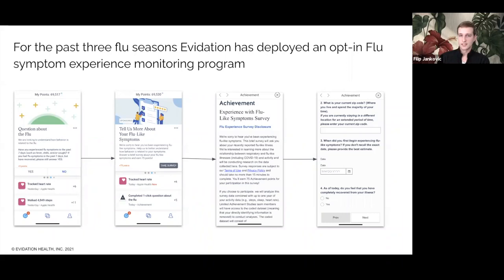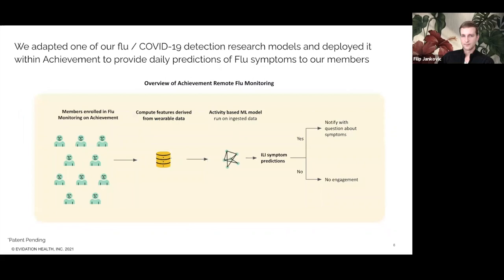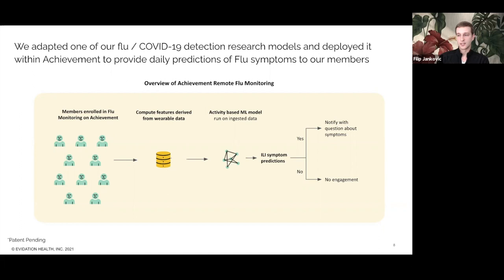For the past three flu seasons, Evidation has deployed an opt-in flu symptom experience monitoring program. Members are able to share their flu symptoms directly in the achievement app. Using permissioned survey responses along with sensor data from wearables like Fitbit, Garmin, and Apple Watch, we can train models for predicting flu symptoms. Last flu season, we adapted one of our flu and COVID-19 detection research models and deployed it within the achievement app to provide daily predictions of flu symptoms. We ran a small-scale POC in production with several thousand enrolled members, computing features from wearable activity data including activity, heart rate, and sleep, then cast daily predictions with an activity-based machine learning model and sent notifications to treatment members where the model predicted positive flu symptoms.